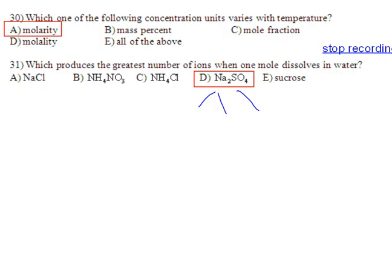And number 30, which one varies with temperature? Molarity, and that's one of the issues with molarity. Molarity can vary dependent on how the temperature changes, because the volume would expand and contract, and therefore the molarity would be going up and down as the volume changed.